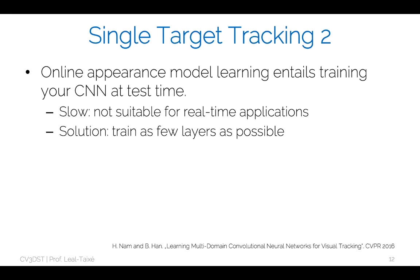The second way to perform single target tracking is MDNet, which learns an explicit appearance model and updates it online as the object's appearance changes. The disadvantage is that the neural network must also be trained at test time, requiring fine-tuning as tracking proceeds. To keep this practical, only a few layers are fine-tuned so that the training at test time is as short as possible, making tracking feasible even without full real-time speed.